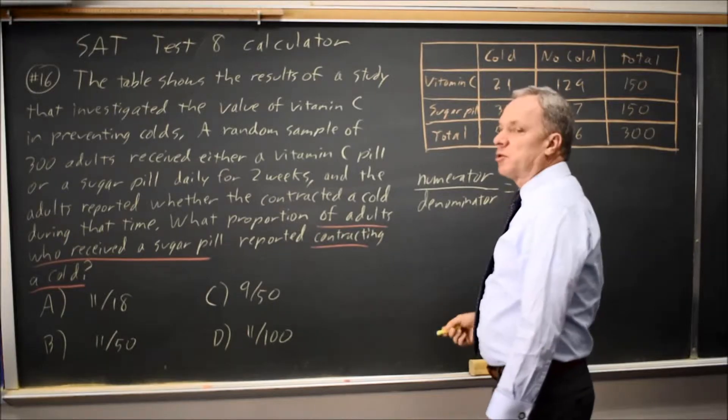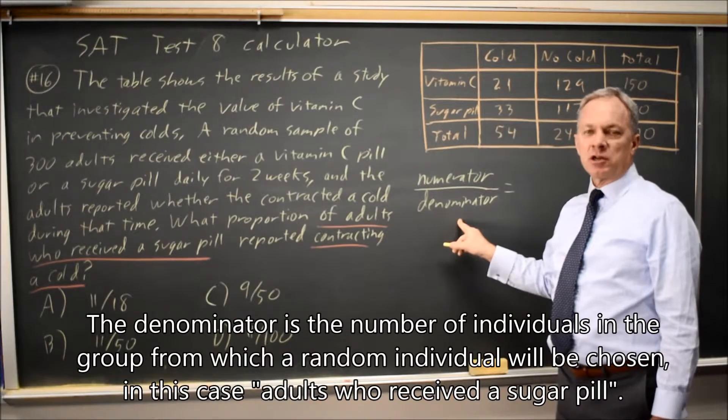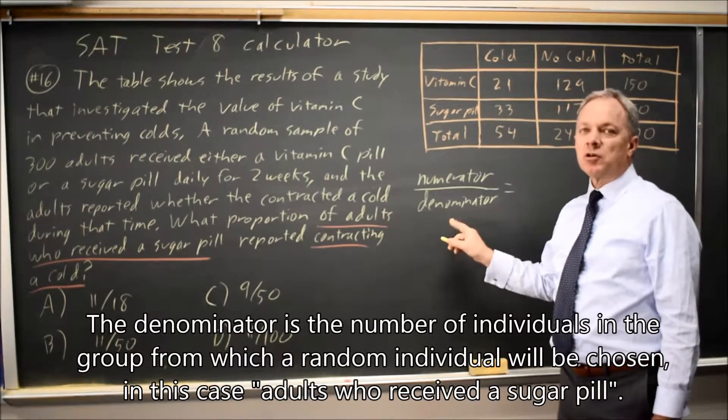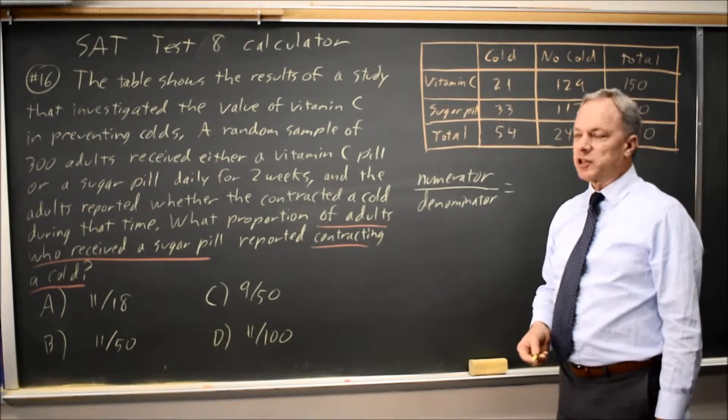Almost as separate questions, because College Board will sometimes ask this where your denominator is one column or more than one column or one row or more than one row or the entire table, so you have to read carefully to make sure you've correctly identified your denominator.